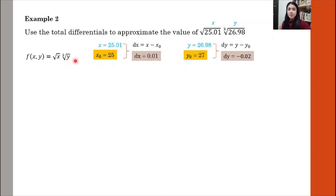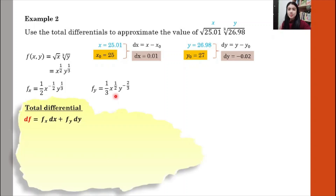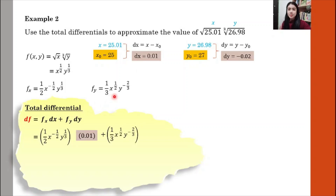We convert the function to index form to make differentiation easier. Then we find the first-order partial derivatives: fx and fy. Next, we apply the formula of total differential. We substitute fx, dx, fy, and dy into the formula.